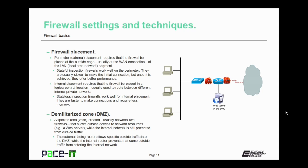A DMZ, or demilitarized zone, requires special configuration or placement considerations for your firewalls. The DMZ is a specific area created, usually between two firewalls, that allows outside access to network resources while the internal network is still protected from outside traffic. You should consider using a DMZ if you're going to have a web server on your network — outside users will need to access it, but your internal network still needs to be protected from malicious traffic. The external-facing router allows specific outside traffic into the DMZ, while the internal router prevents that same outside traffic from entering the internal network.